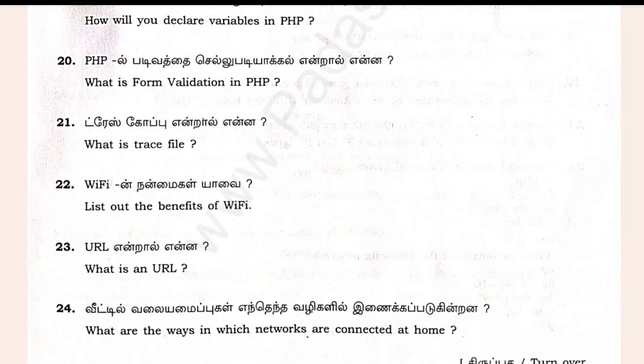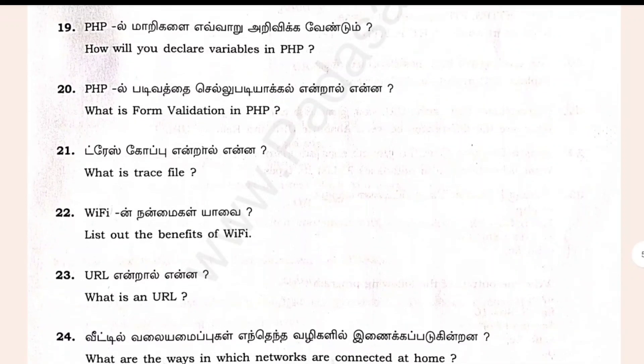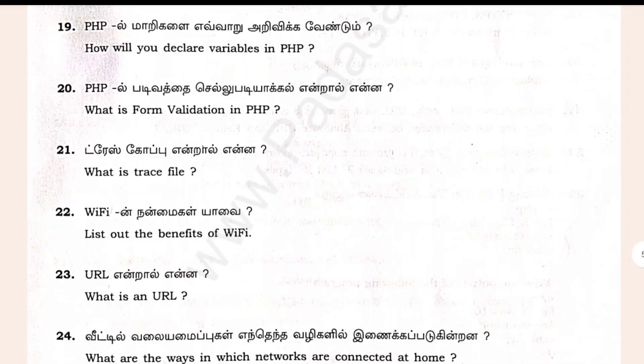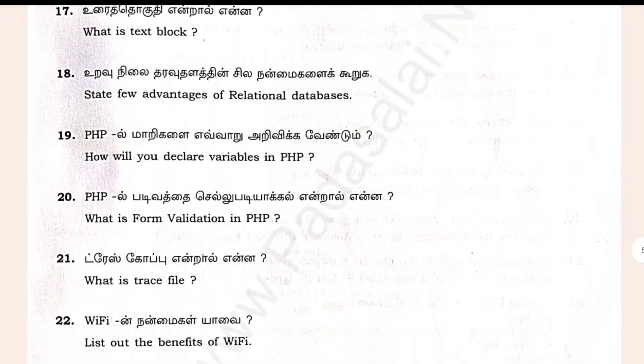Let's look at the ways in which networks are connected at home — it's very simple. Topics include: what is a URL, list of benefits of WiFi, what is a trace file, and what is form validation in PHP.